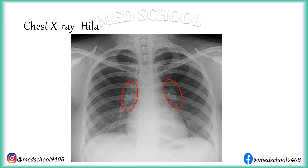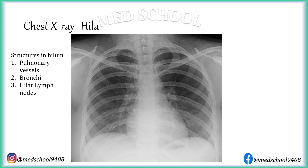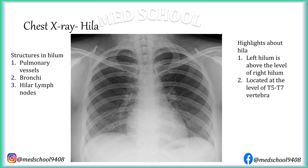Hila are radiopaque structures between the lungs and mediastinum. Structures in each hilum are pulmonary vessels, bronchi, and hilar lymph nodes. Normally the left hilum is slightly above the level of the right hilum, but both are present at the level between the 5th to 7th thoracic vertebra. Hila can become more prominent in perihilar pneumonia or hilar lymphadenopathy. The prominent structure in the right hilum is the right interlobar pulmonary artery, and the stump-like structure in the left hilum is the left pulmonary artery. Both structures can be enlarged in pulmonary artery hypertension and pulmonary embolism.